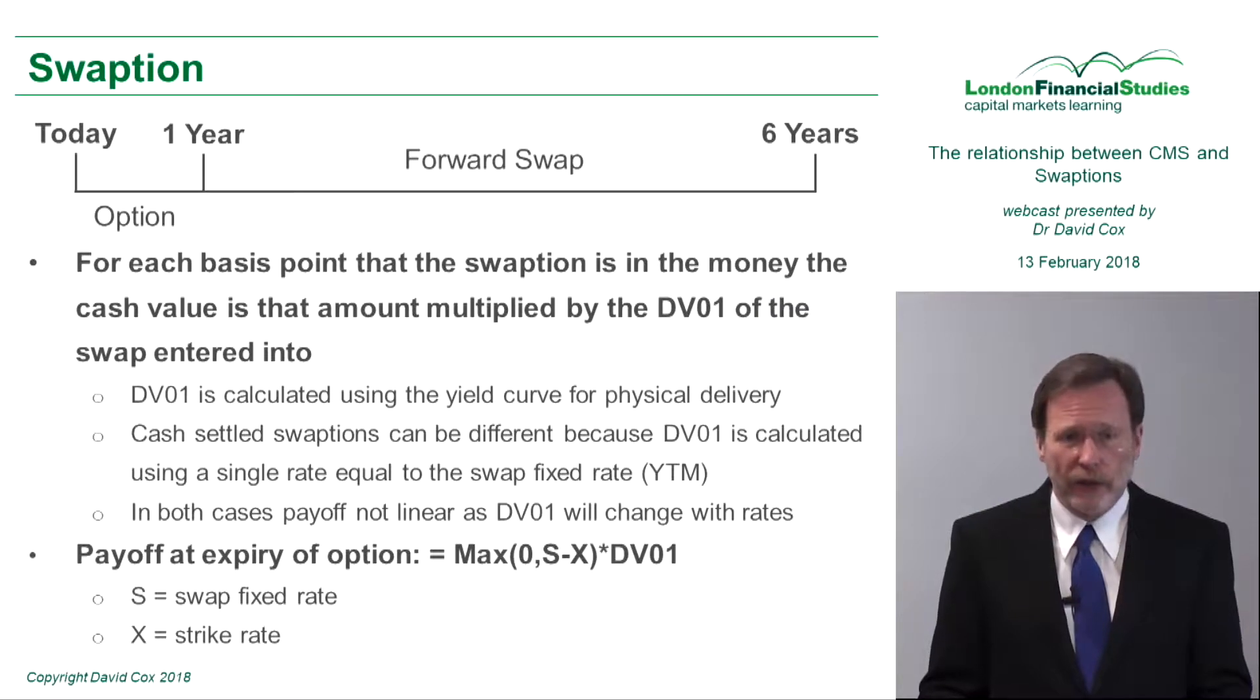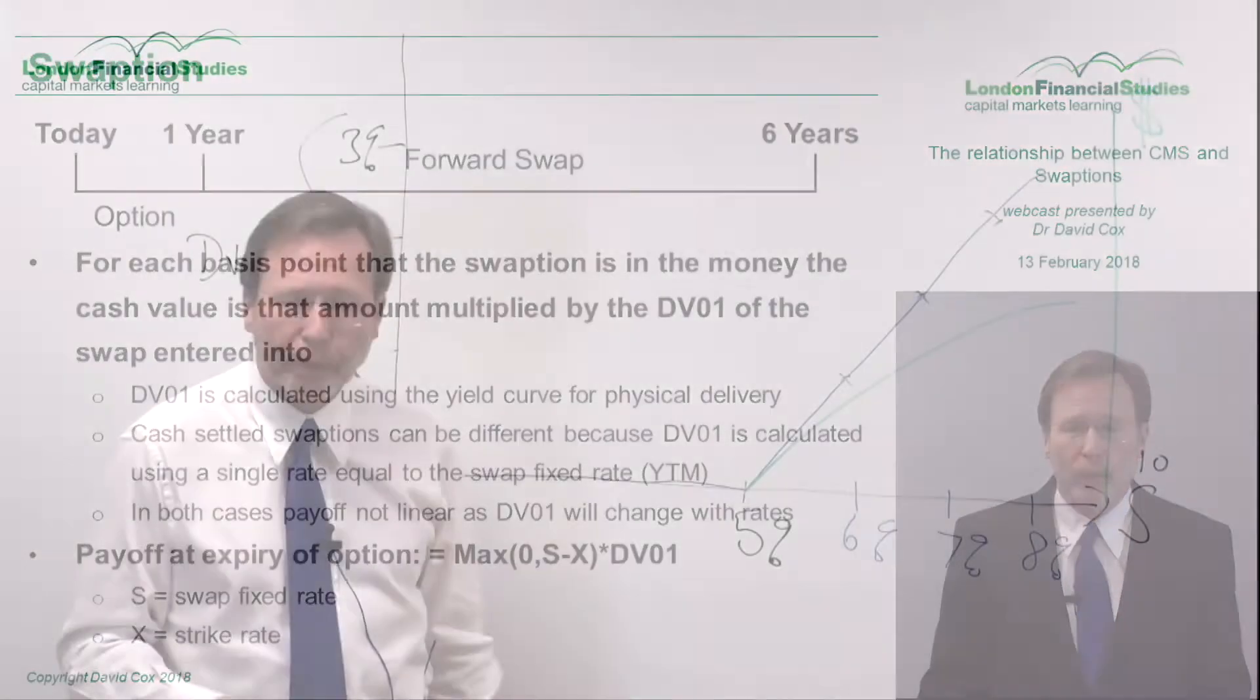If we're looking at a payer swaption in this first example, as rates sell off, you'll see the payer swaption going in the money. But of course, as rates rise under a sell-off in the market, what we see is that the DV01 declines. So if the DV01 declines, the cash amount earned by being long that swaption.